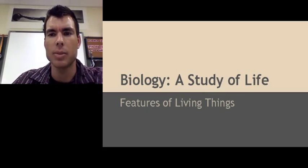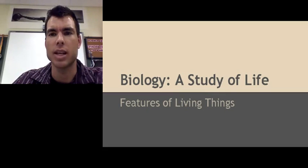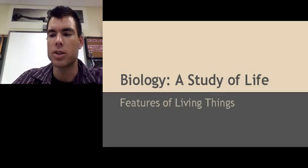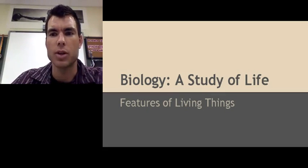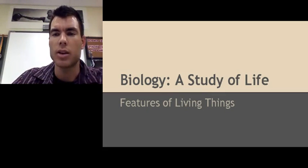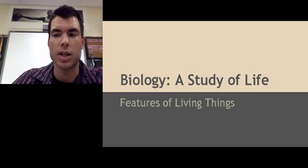A couple of scientists — three scientists exactly — later came up with the cell theory. There were three parts to the cell theory. Part one: all organisms are made of one or more cells. Part two: the most basic structure and function of all organisms is the cell. And part three: all cells come from previous or other cells.